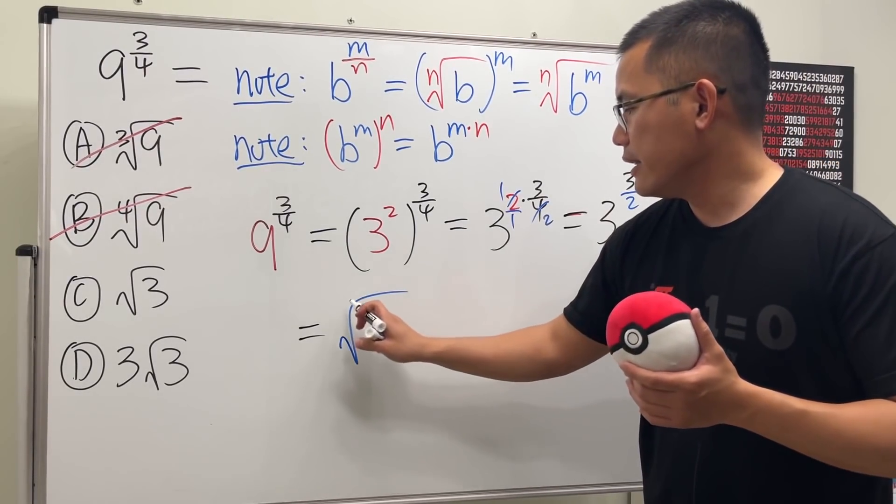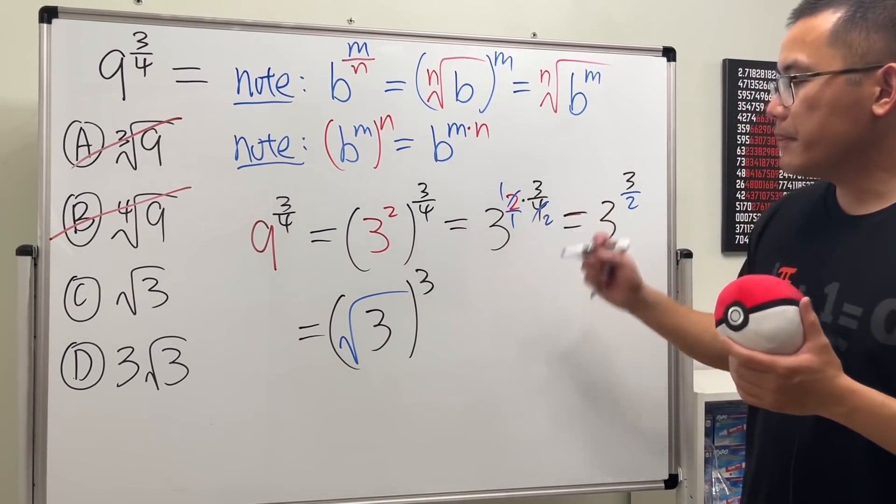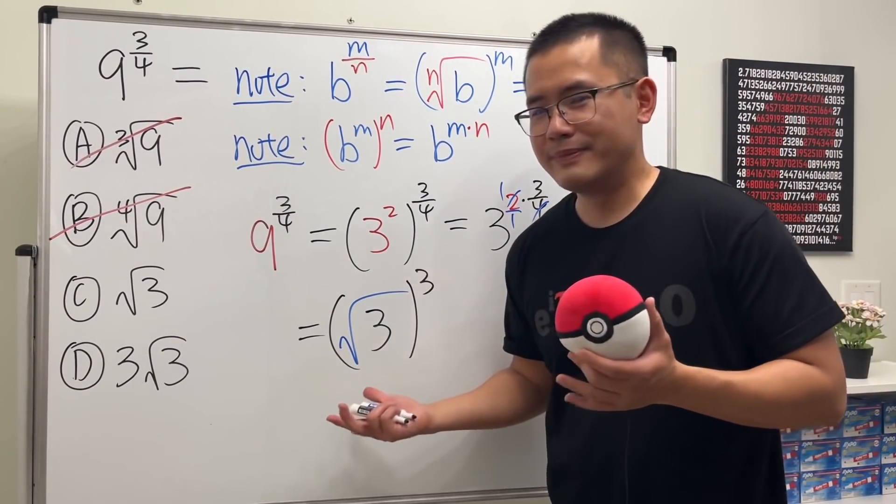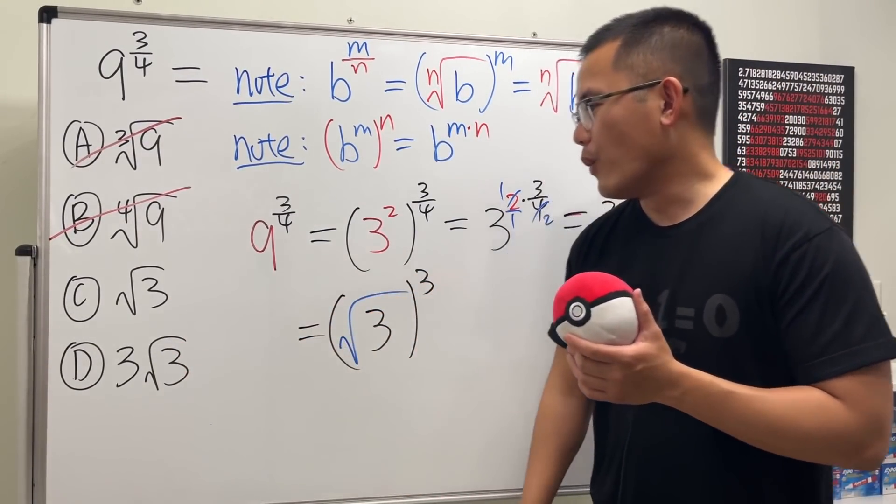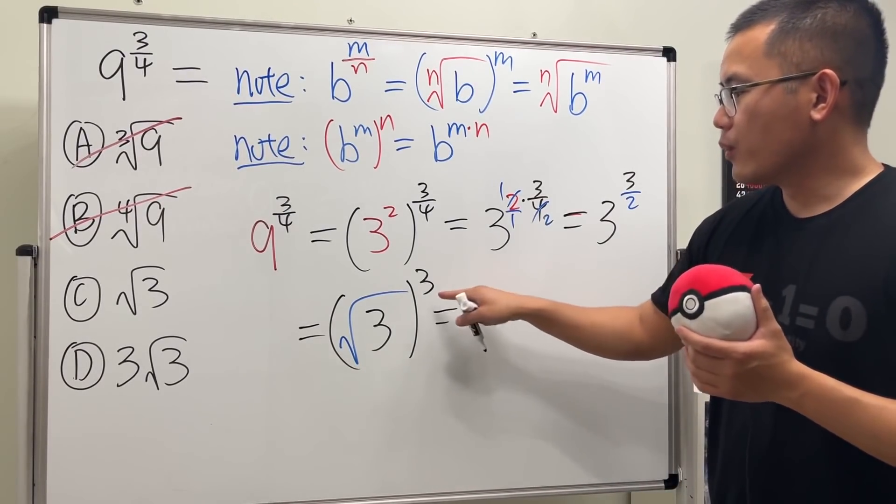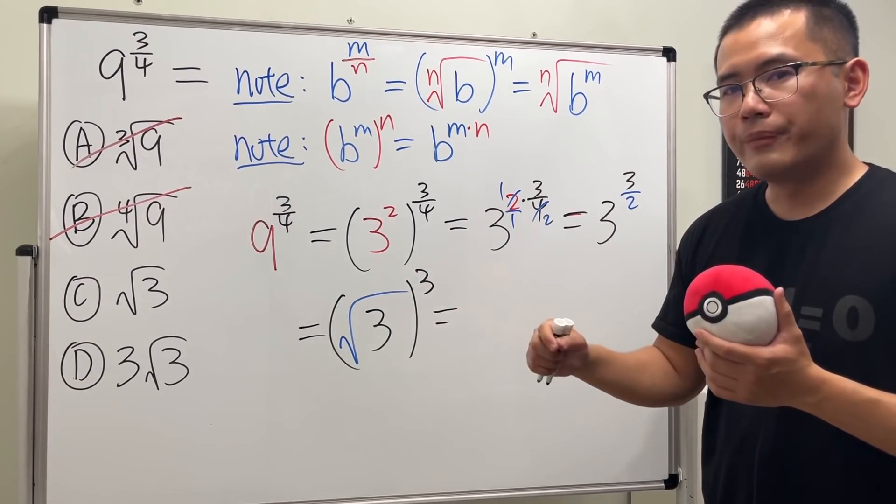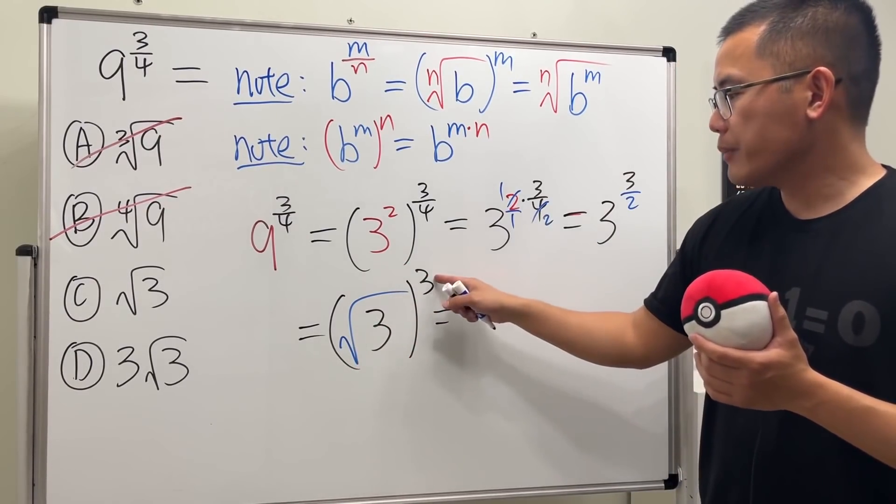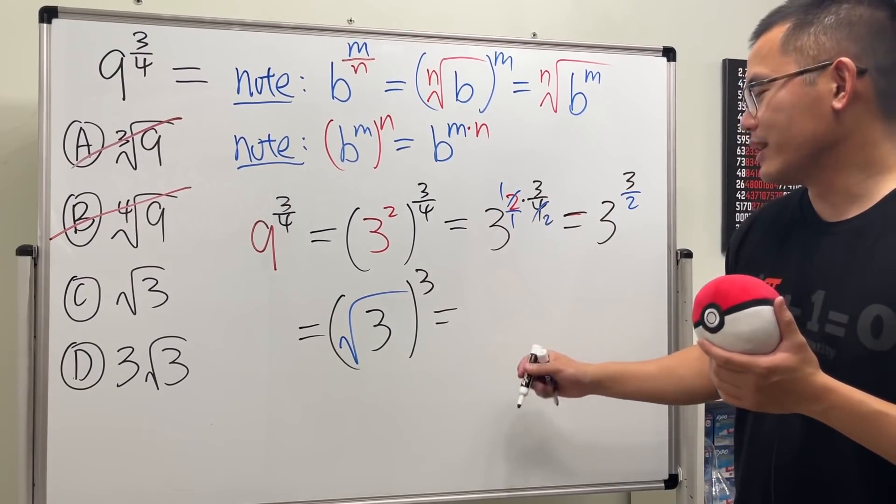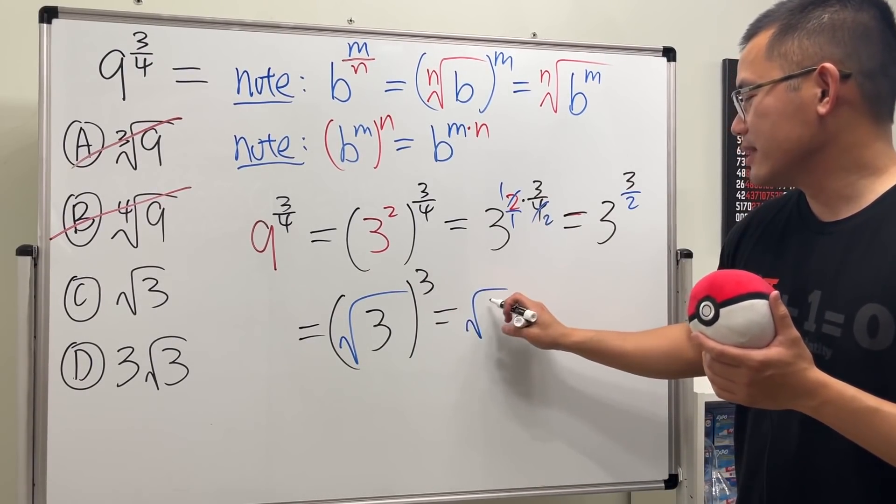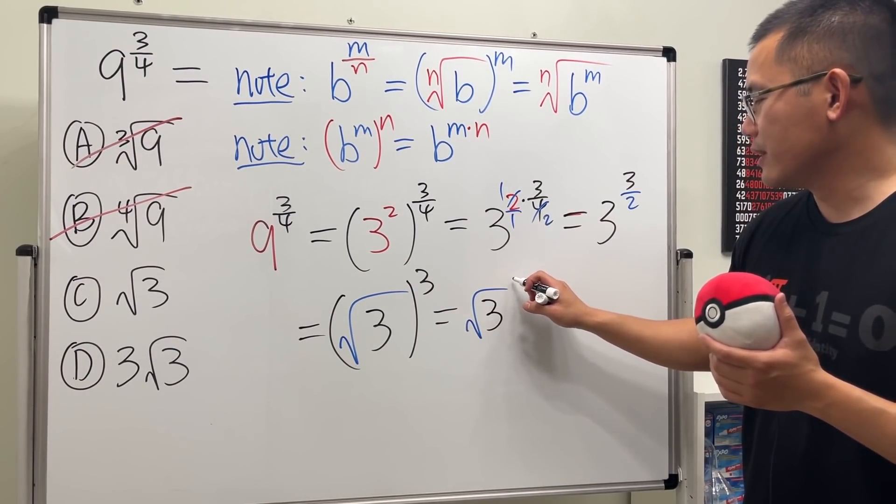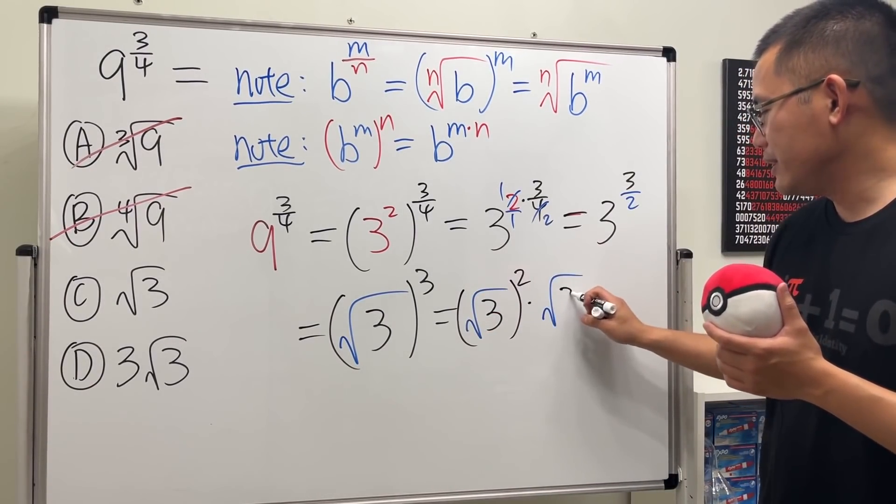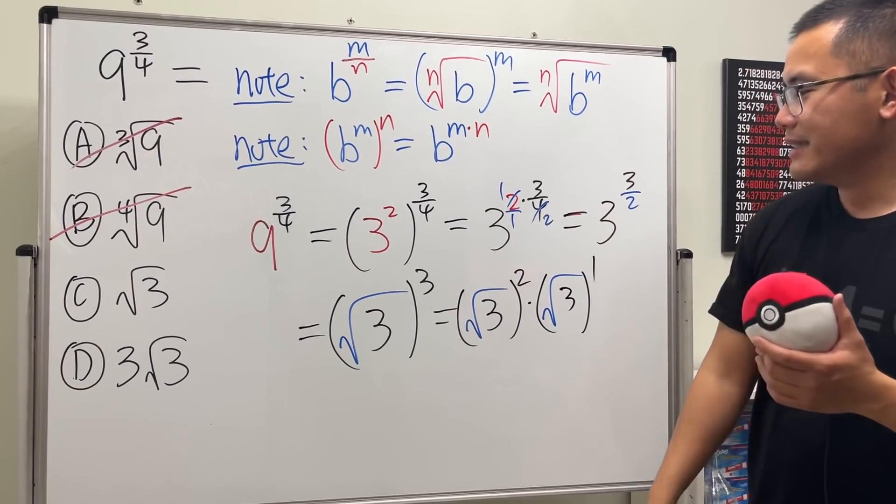Like this. But again, this does not look like C or D. But don't worry, here's the thing. When you have the three right here, remember square and the root, and then the square root will cancel. So I'm going to break down the three into two plus one, and I'm pretty sure that I'm doing this a slightly longer way, so just bear with me. Like this, and then times square root of three to the first power, because two plus one is three.